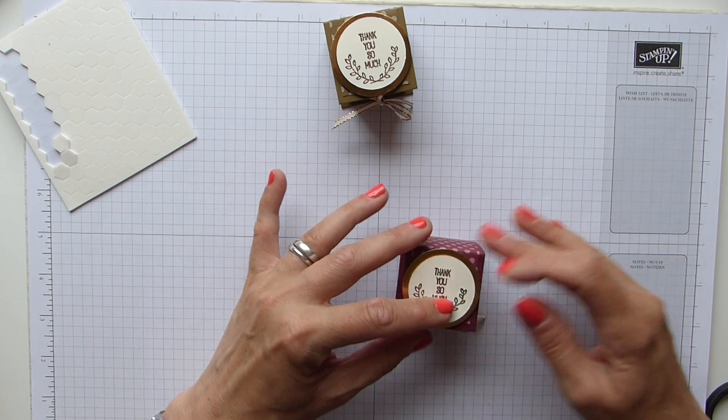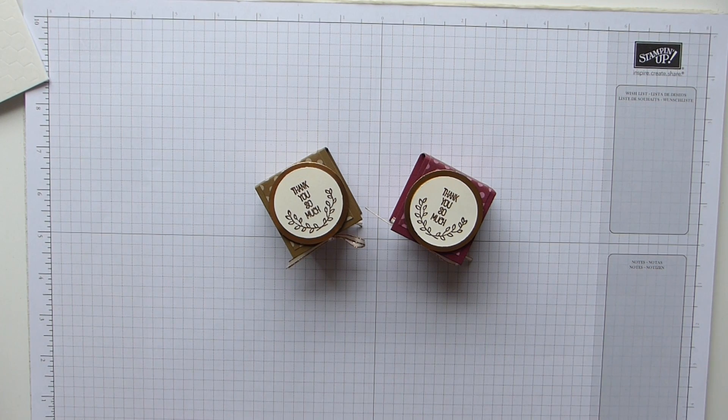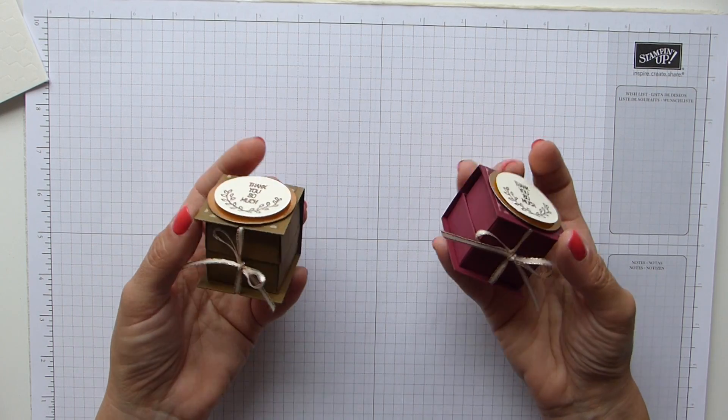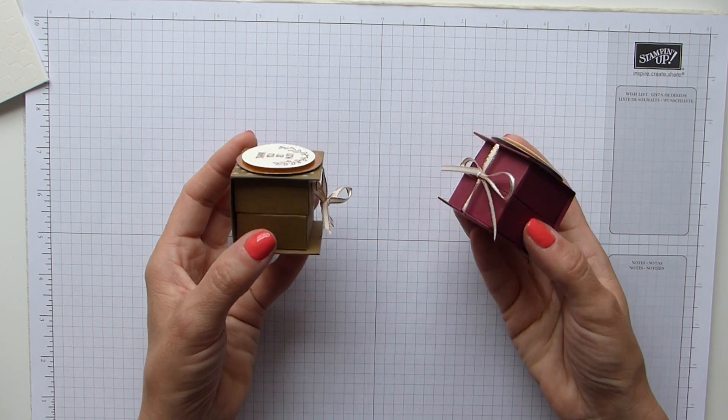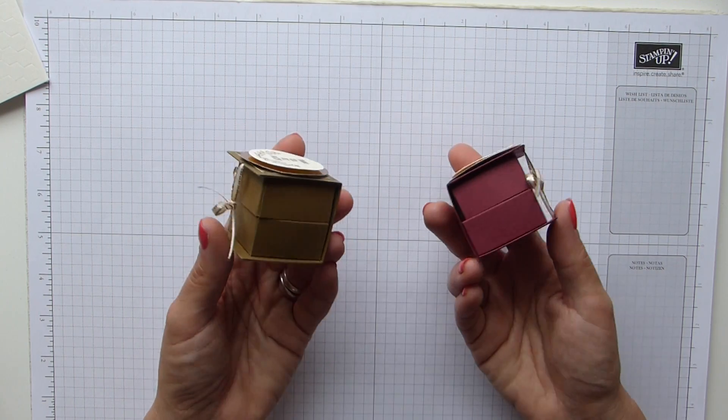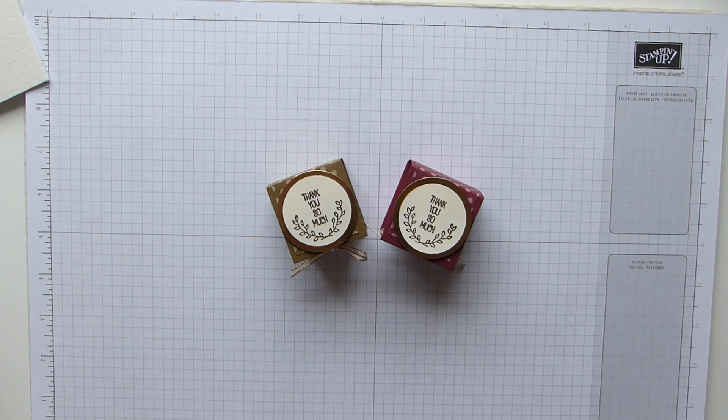And there we have it, two cute little book fold tea light thank you gifts. Thank you for being patient with me. Hope you enjoyed it, and I hope you have a go at making some of these little cute things yourselves. As I say, they'd be perfect for table favors or for parties, and obviously the tea lights are from Ikea, so they are really really cheap and you can get quite a few out of their packs. I hope you enjoyed it, I hope to see you all again soon. Bye.